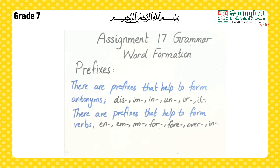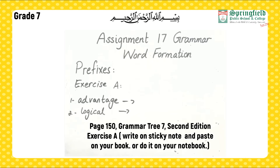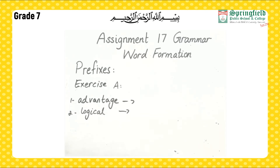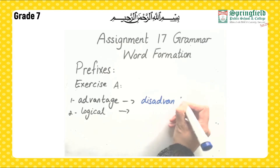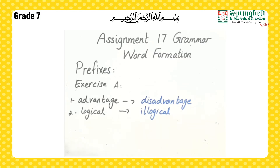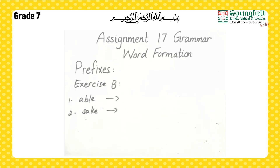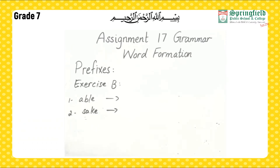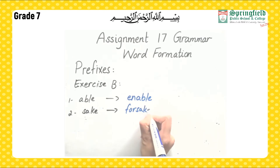Now we will move towards Exercise A: with appropriate prefixes, form antonyms of the given words. I'm doing the first two for you — advantage becomes disadvantage, and logical becomes illogical. You have to do the rest in the same way. Exercise B: with appropriate prefixes, form verbs of the given words. Able becomes enable, and sake becomes forsake. Do the rest in the same way.